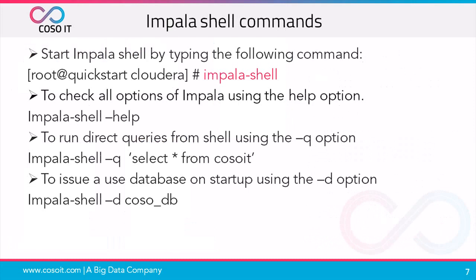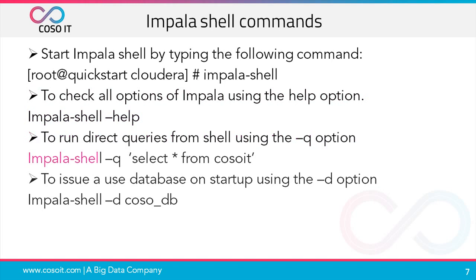Let us see some of the Impala shell commands. To start Impala shell, you type the command impala-shell. To check all options using the help option, you run impala-shell --help. To run direct queries from the shell using the -q option, you can say impala-shell -q and provide the necessary query, such as SELECT * FROM cosoid.